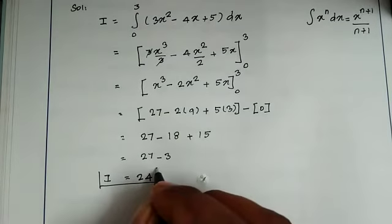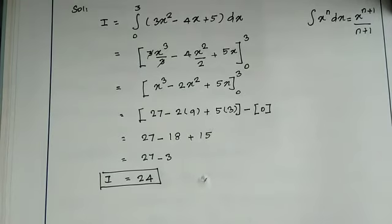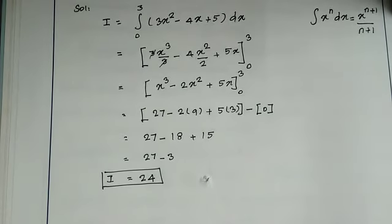So I is equal to 24. That is, the integral from 0 to 3 of 3x square minus 4x plus 5 dx equals 24.